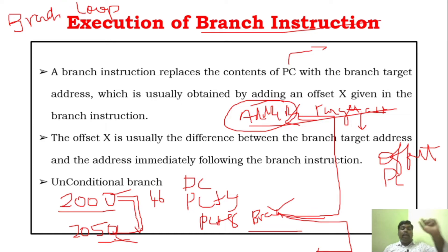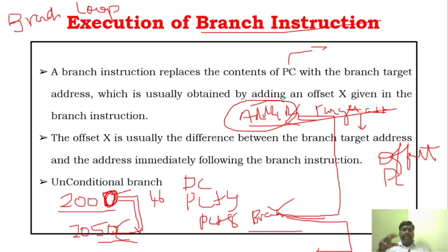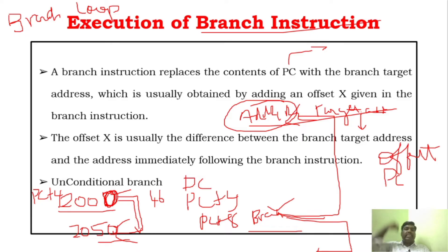For finding out the branch target address, we are not using the original PC value — we are using the updated PC value, which is PC plus 4. The PC is already incremented when we compute the branch address. The offset value is actually the difference between the target address and the address immediately following the branch instruction — that is PC plus 4, which is 2004. So the difference between 2004 and 2050 gives the offset of 46.